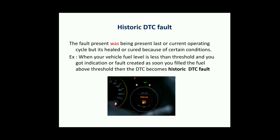A historic DTC fault is one that was present in the last or current operating cycle but has healed or been cleared due to a certain condition. Consider the same fuel level example: you get the low fuel indication on the dashboard, but without turning off the key you fill the fuel, and the fuel level rises above the lower threshold — so the particular fault heals and the low fuel indicator goes off.